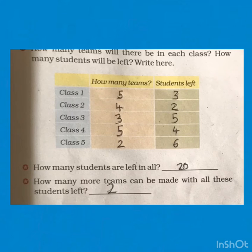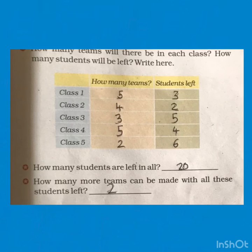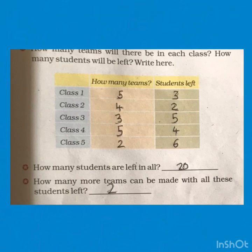How many teams will there be in each class, and how many students will be left? Class 1 — 5 teams, students left 3. Class 2 — 4 teams, students left 2. Class 3 — 3 teams, students left 5. Class 4 — 5 teams, students left 4. Class 5 — 2 teams, students left 6.